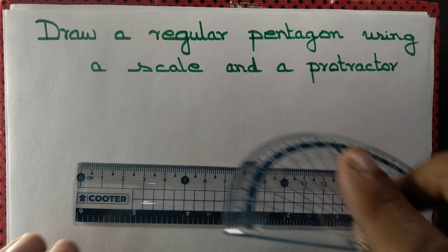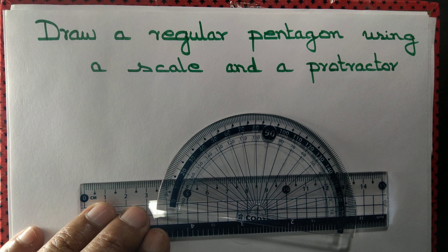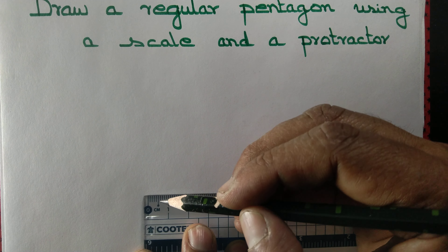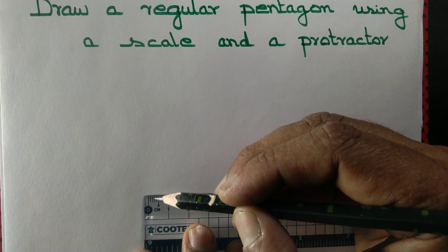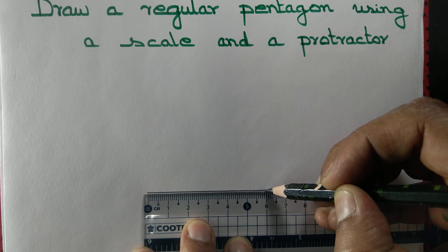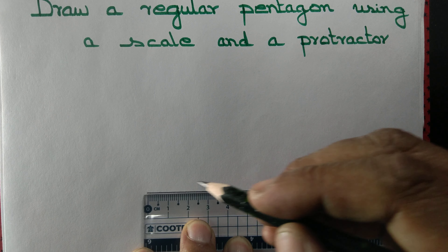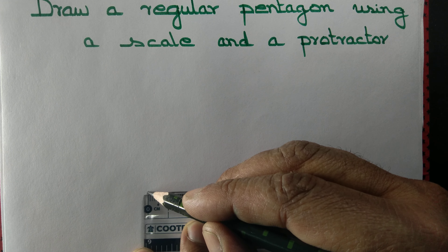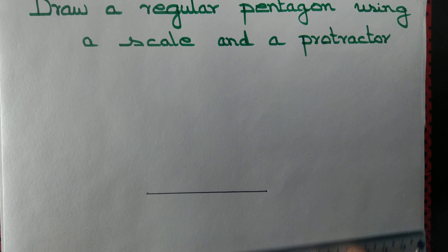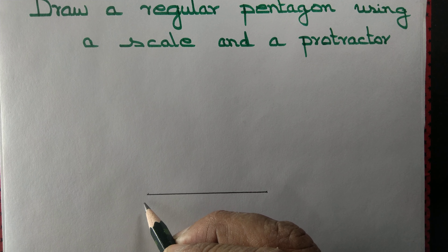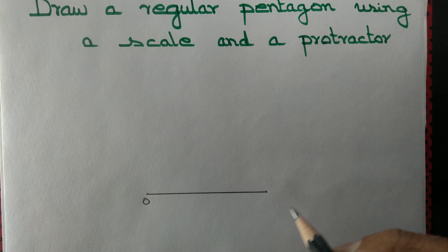Let us draw a regular pentagon using a scale and a protractor. Draw a line segment that measures 6 centimeters. So we have a line segment OA that measures 6 centimeters.